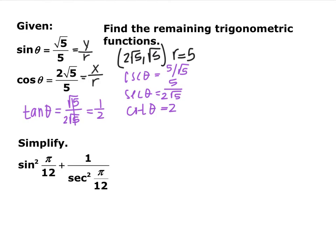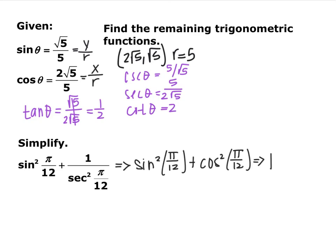For the next part, use your trig properties to simplify the expression. Pause and try it. The key is to recognize that 1 over secant equals cosine, so 1 over secant squared equals cosine squared. You now have sine squared of some angle plus cosine squared of the same angle, which is the Pythagorean identity — sine squared plus cosine squared equals 1. As long as the angles match, the identity holds.